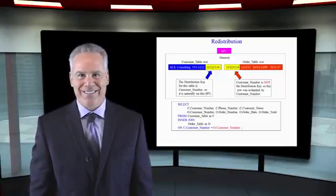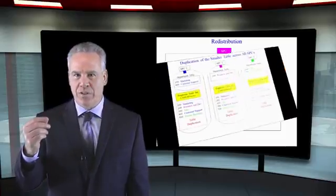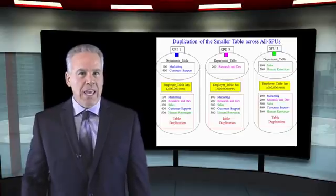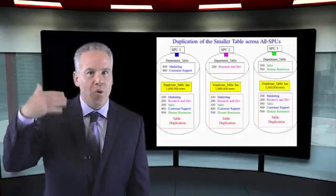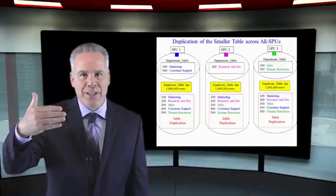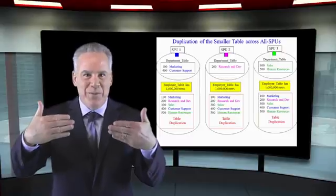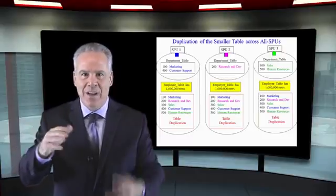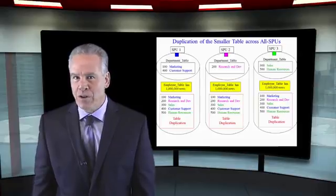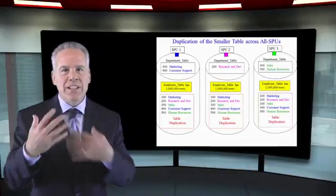Now Netezza's got other options when two joining rows are not on the same SPU. It could redistribute one of the tables by the join column. Sometimes in worst case scenario, it might have to redistribute both tables by that join column, or it can duplicate the smaller table across every SPU. So let's look at it this way.